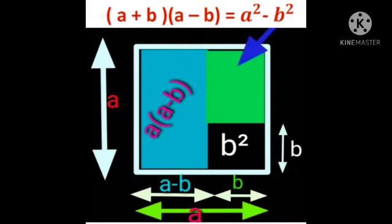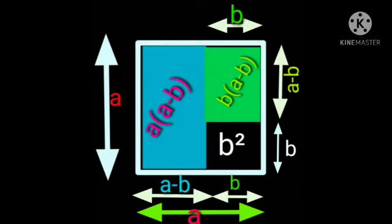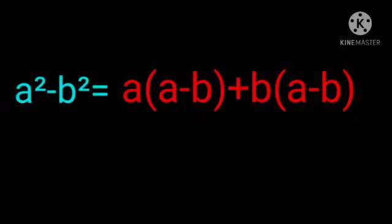Now, the second portion: its length is (a - b) units, as total length is a units and we subtract b from it to get (a - b) units. Its breadth is b units. So its area is b × (a - b). Now, adding these two portions, we get: a² - b² = a(a - b) + b(a - b).